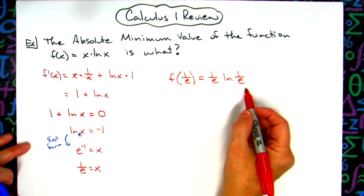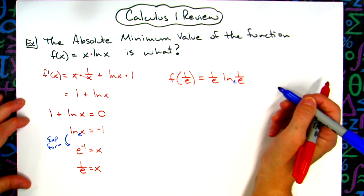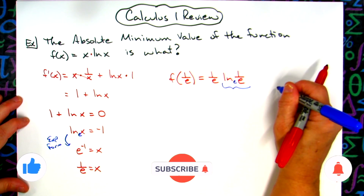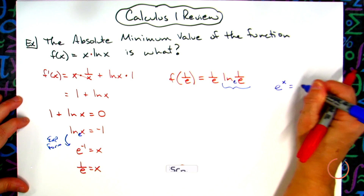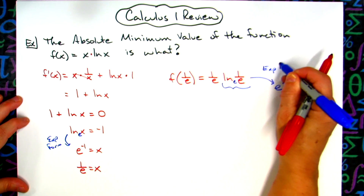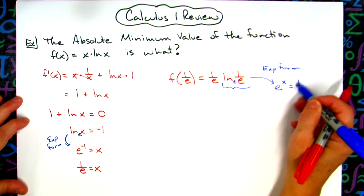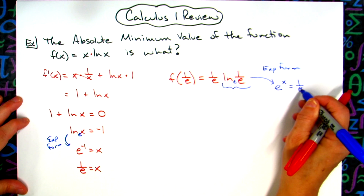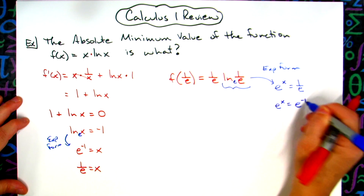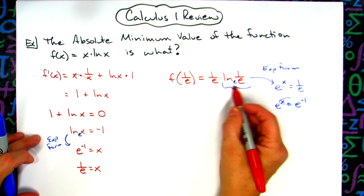We're going to simplify this a bit. Looking at ln(1/e), this has a base of e. Writing it in exponential form: e^x = 1/e. Using laws of exponents, I can move the 1/e and make it e^(-1). So e^x = e^(-1), which tells me x = -1. So this quantity equals -1.